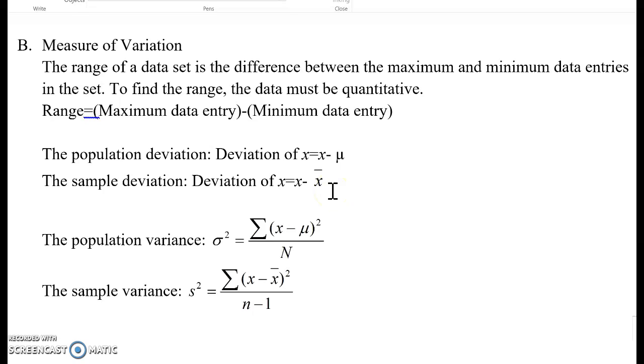The population variance, we just call sigma square, which is equal to the sum of each entry mean deviation square over number of data. Similarly, the sample variance, s-square equal to the sum of each entry mean deviation square over n minus 1.